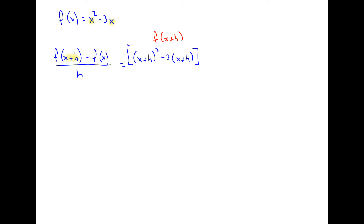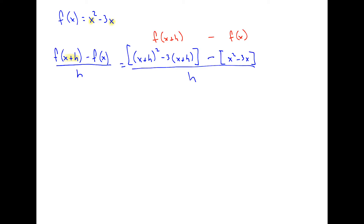Now we do the next part: minus f of x. That whole original expression represents f of x, so we write minus, in brackets, x squared minus three x. This is minus f of x. All of this is then divided by h. Once it's plugged in, it's really a matter of simplifying everything down to simplest form.